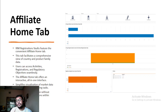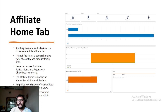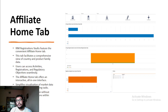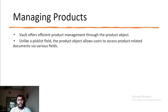Users don't need to navigate other tabs — they can perform their tasks on one page. They will see their pending tasks and stay productive without navigating various sections within Vault. If you want to know more about the affiliate home tab in detail, please reach out to me on LinkedIn. As I currently don't have platform access, I'm not demonstrating it on this channel, but feel free to reach out.